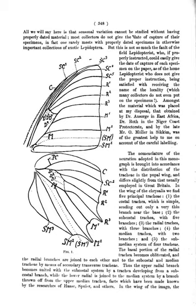Osmaterium: fleshy structure on some larvae, often discharging odorous chemicals. Oviposition: the act of laying eggs. Oviscape: if part of the ovipositor is visible when not in action, then the basal visible portion, typically tubular, is the oviscape; for examples see females of many Tephritidae and Pyrgotidae.